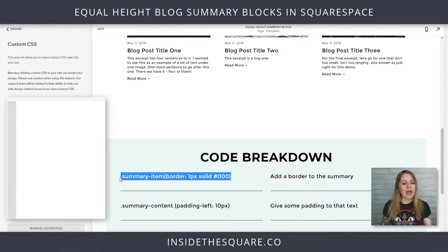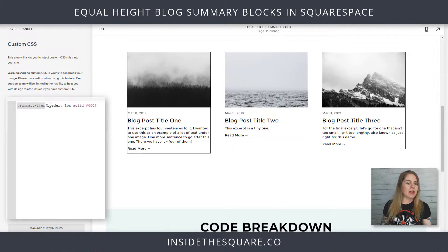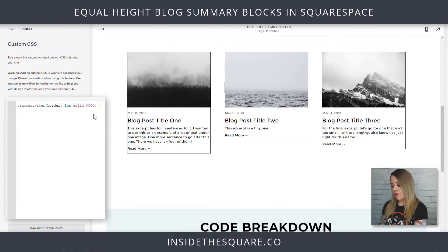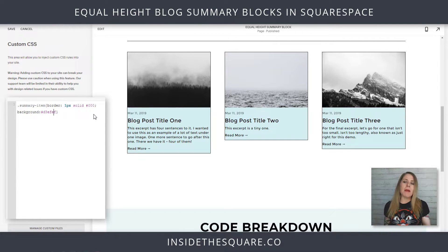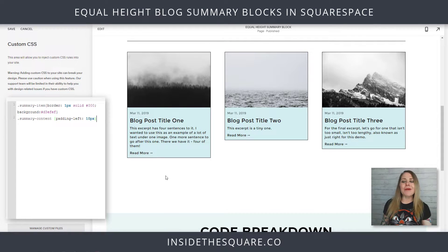Right off the bat I went ahead and created this one just to give us a border to the summary so you can see what we're working with — this just says summary item, give it a border. You can also use this to add a background if you'd like. Let's go with a nice light blue. Now it's got a background and you can see what we're working with. Personally, I don't like how the text bumps right up to the edge of that summary content, so I'm going to give a little bit of padding to the left of that text. Now it looks just right with a little more wiggle room.